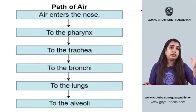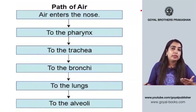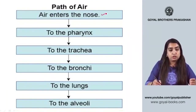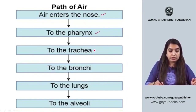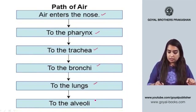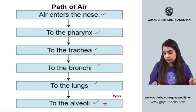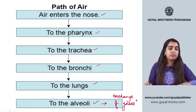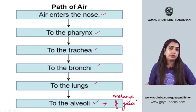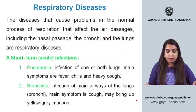The pathway of air during respiration: air enters through the nose, passes to the pharynx, then reaches the trachea, which divides into bronchi. The bronchi enter the lungs where alveoli are located, and finally the exchange of gases takes place there.